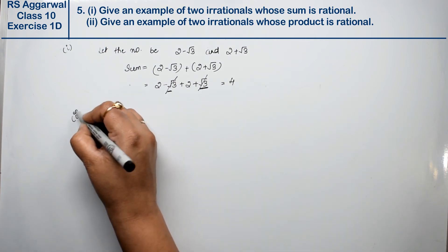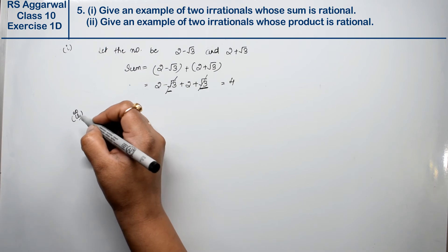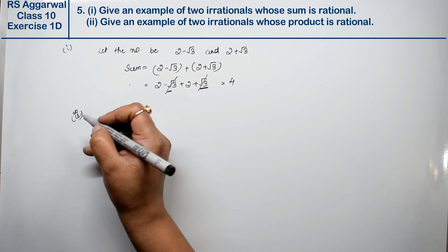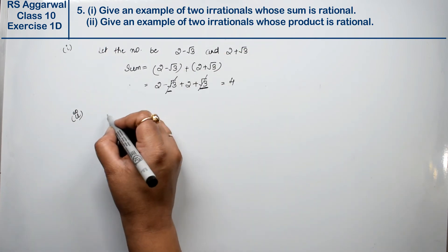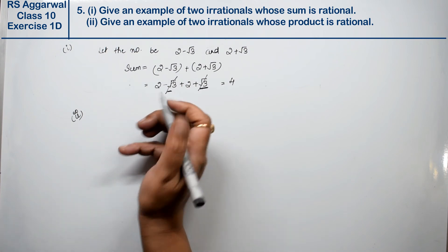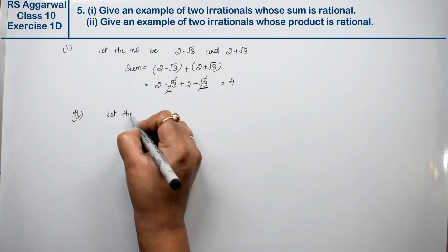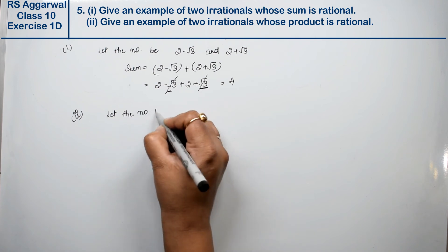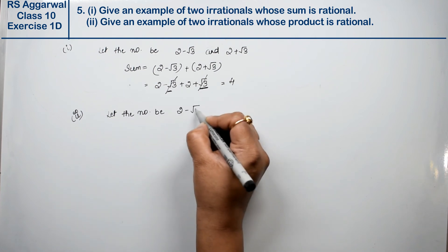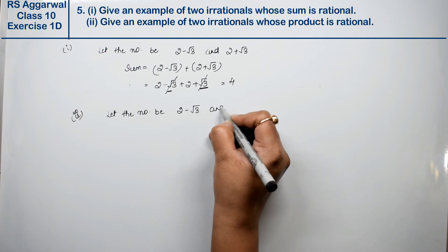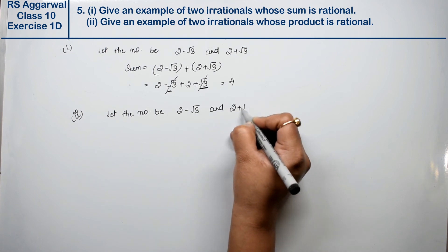Let's do the second part. Give an example of two irrationals whose product is rational. We have to take two irrational numbers whose product is rational. So let the numbers be 2 minus root 3 and 2 plus root 3.